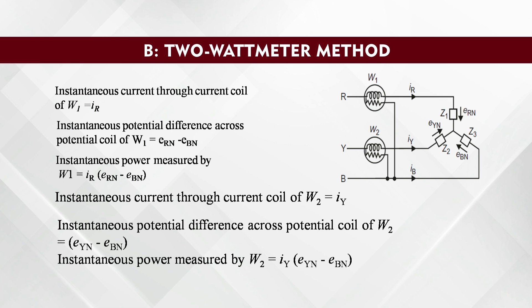The reading of wattmeter 1, W1, equals I_R. The instantaneous potential difference across the potential coil of W1 can be written as E_Rn minus E_Bn. So, the instantaneous power measured by wattmeter 1 is the product of voltage and current: current is I_R and the voltage between R and B is E_Rn minus E_Bn. Just multiply this voltage by the current to get the instantaneous power measured by wattmeter 1. Similarly, the instantaneous current through the coil of W2 is assumed to be I_Y.